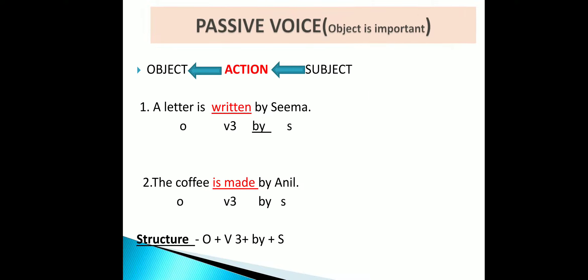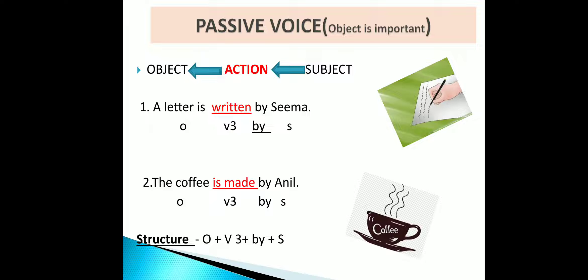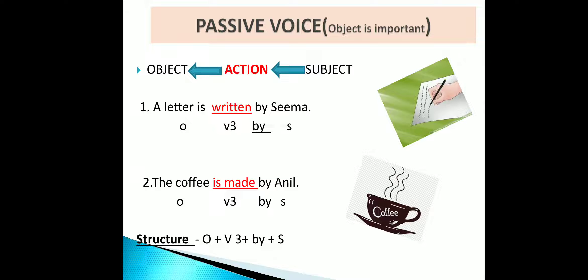What is the meaning of passive voice? In passive voice, the object is important — the object receives the action done by the subject. See the previous examples in passive voice: 'A letter is written by Sima.' Here, importance is given to the letter rather than Sima. See the second example: 'The coffee is made by Anil.' Here, importance is given to the coffee rather than Anil.